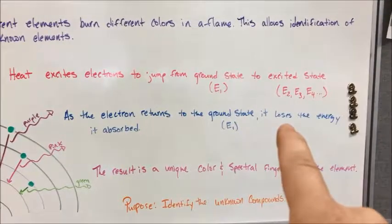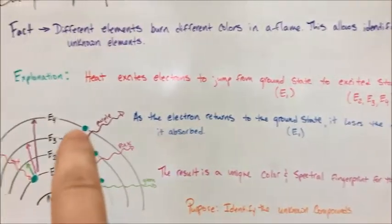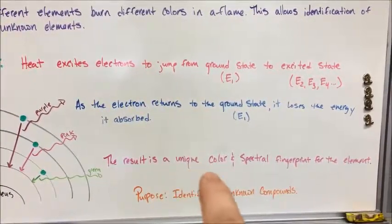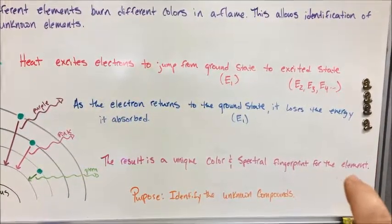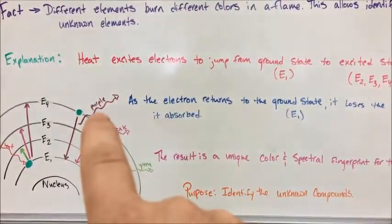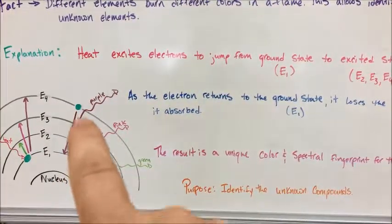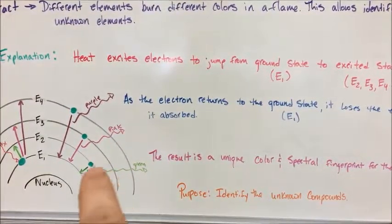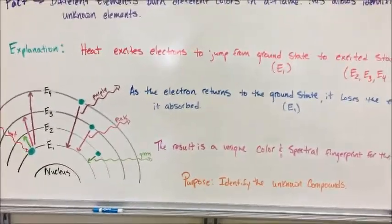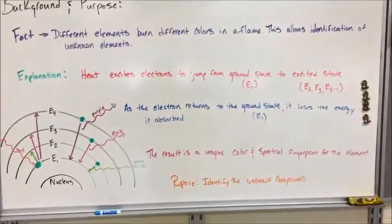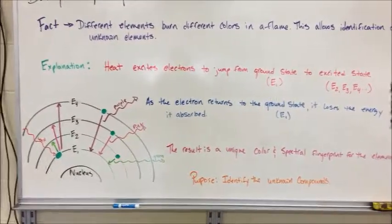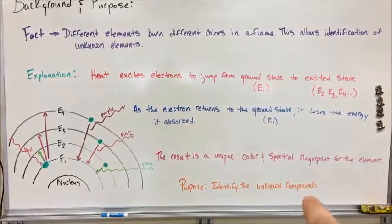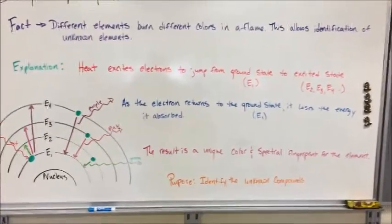As the electron returns to the ground state, it loses the energy that it absorbed. So it wants to get back to where it came from, and the result is a unique color and fingerprint of the element. When it jumps from state four down to one, for example, it might release a purple color. From three to one, it might be pink. And from two to one, it might be green. When you get all these colors overlapping, you get a mix, and you can then see that the element is burning a certain color. So the purpose of this lab is to identify the unknown compounds. Let's get to the procedure.